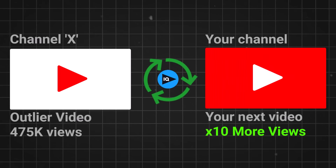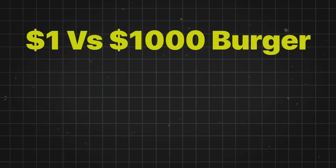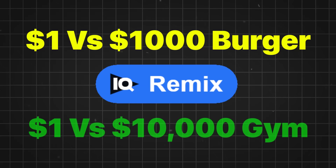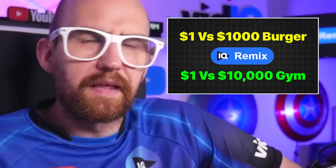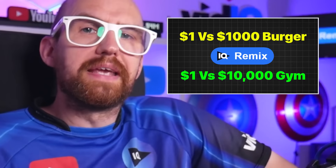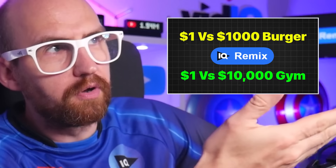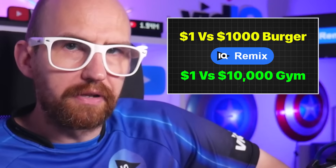For example, let's say you're a fitness channel. You can find inspiration from a $1 versus $1,000 burger video, and make it a $1 versus $10,000 gym video. That sounds pretty intriguing, doesn't it? So let me show you how all of this works in a real world example.